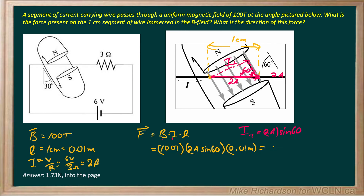When you work all of that through, you get 1.73 Newtons. Now, what about the direction? The right-hand rule assumes everything is 90 degrees to each other, so your thumb represents the perpendicular current — pointing along the blue line to the upper right. Your fingertips point down to the lower left, and the palm of your hand shows which way the force goes. It should be into the page.